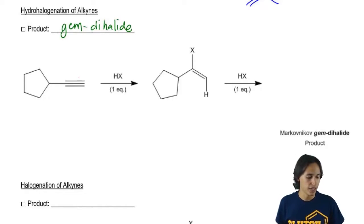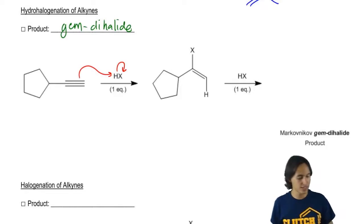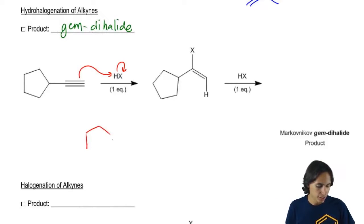If I were to react this with one equivalent, I would expect to get that the triple bond attacks the H, kicks out the X, so I wind up getting a carbocation that looks like this with a positive charge here and an H here.